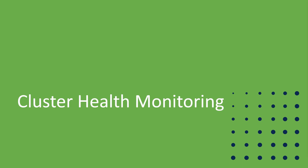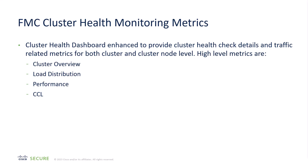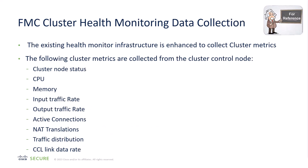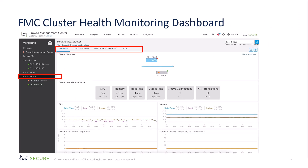Moving on to cluster health monitoring — with each release we've been enhancing our health monitoring, and 7.3 was our opportunity to enhance health monitoring for clustering. We now have a dashboard with four tabs, which gives you a lot of information about performance. In the case of certain models, we'll also give you information about the power supply. Here are the performance metrics gathered for cluster health monitoring. The dashboard includes an overview, load distribution, performance, and cluster control link tabs, and you can create your own custom tabs.